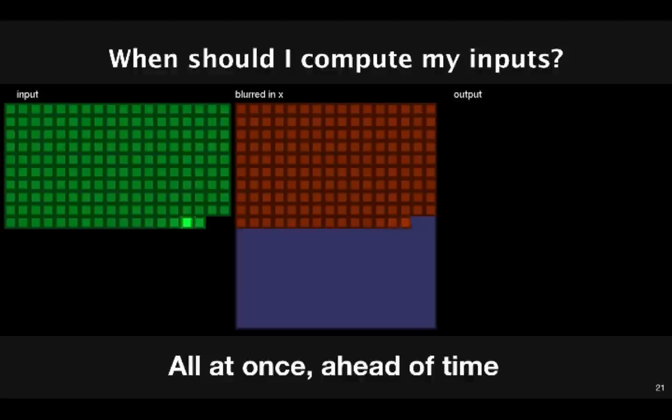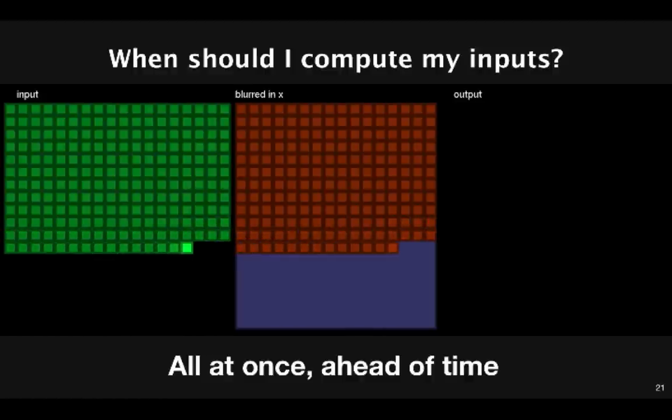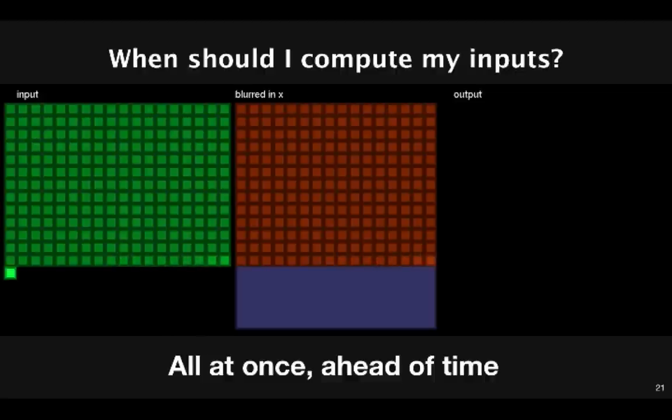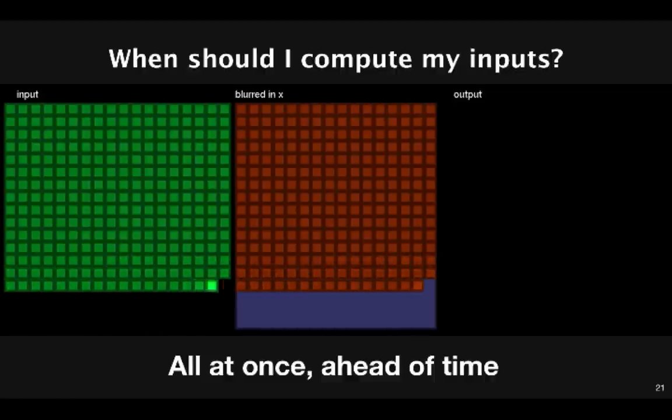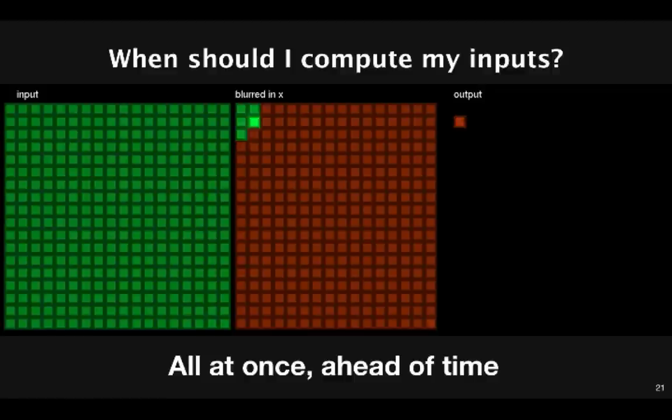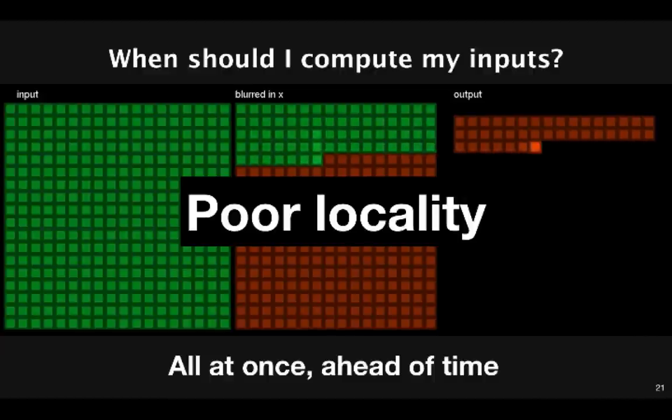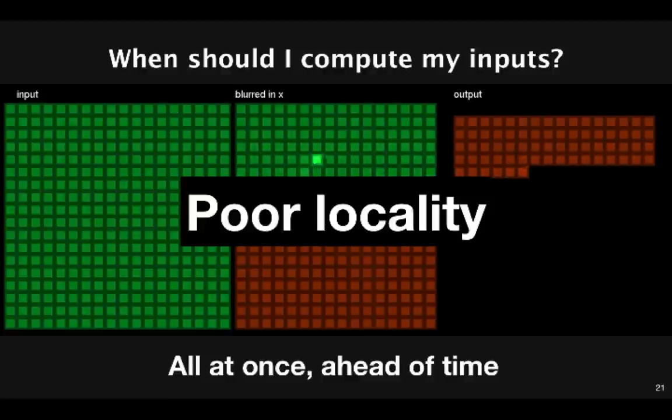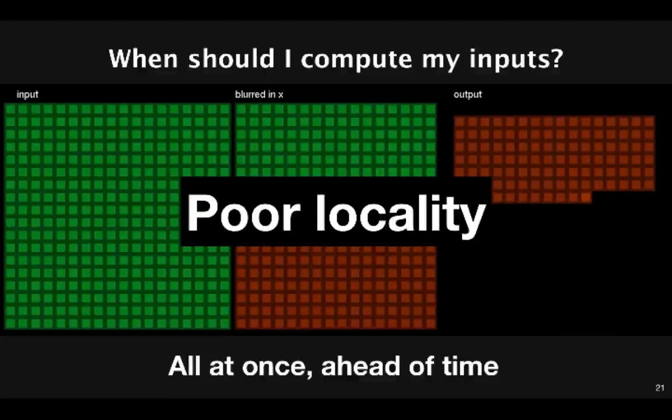So the choice we've made here is that we're going to compute all of the blur in x stage before computing any of the blur in y stage. If we phrase this as a decision made by blur in y, that decision is compute all of my inputs ahead of time before I start computing any of my values. So what's the pitfall with this approach? Why is this slow? The answer is, of course, locality. By the time the blur in y stage goes to read some of the intermediate data, it's probably been evicted from cache. So that load will be slow, and it'll be limited by the system memory bandwidth.